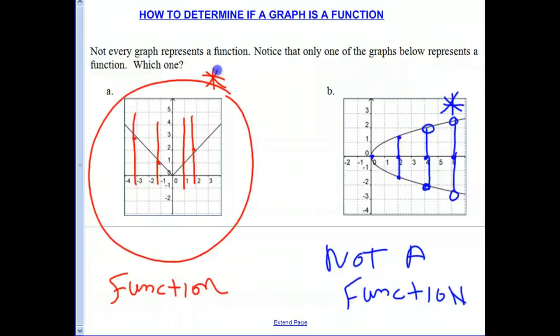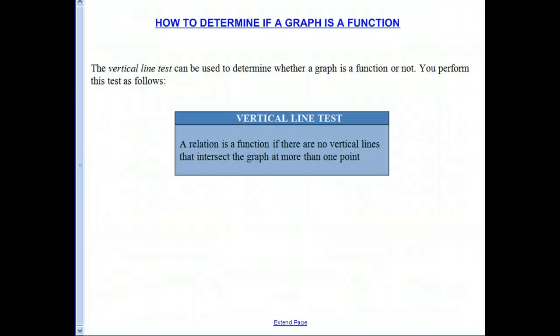So we have an easy way of determining if a graph is a function. If that vertical line intersects that graph at one point, then it is a function. If it intersects the graph in two or more points, it is not a function. This is called the vertical line test.